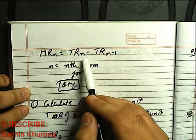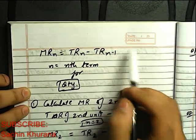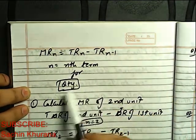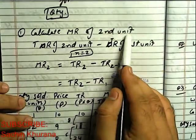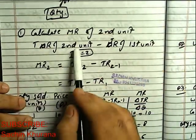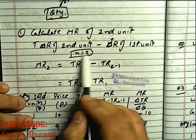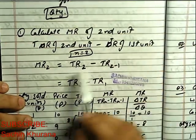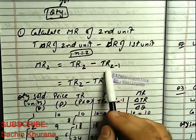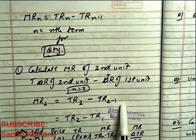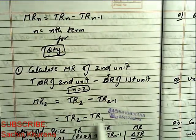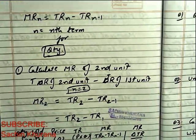So MR is equal to TR n minus TR n minus 1. N is the nth term for quantity. If we have to calculate MR of second unit, TR of second unit, N is equal to 2, TR of first unit. It means MR2 is equal to TR2 minus TR2 minus 1, which equals TR2 minus TR1.